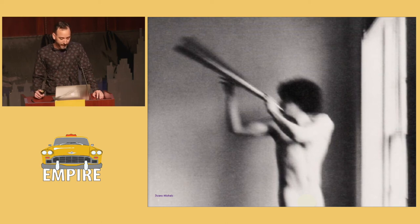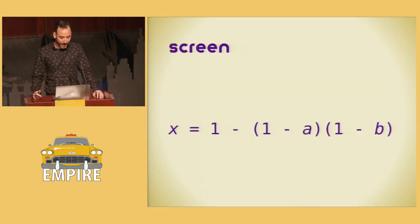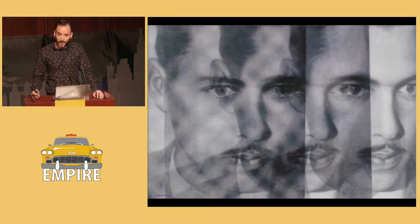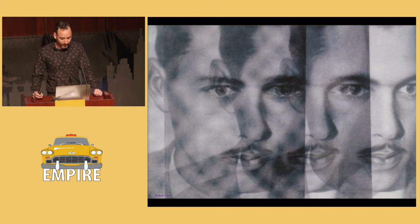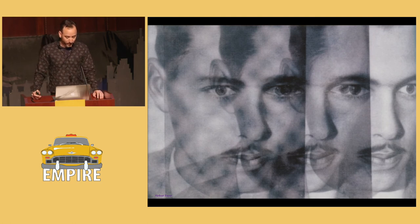But if screen is the opposite of multiply, why isn't it called divide? Because if you look at the math, you can see we're not doing any division here. Instead, we're taking the inverse of the inverse of A times the inverse of B — so actually more multiplication. Getting back to Bayer's calling card, it consists of three images. Each time the image is reprinted on the card, the ink covers up more of the paper, meaning it always makes the value darker. And that means we're going to use the multiply blending mode.